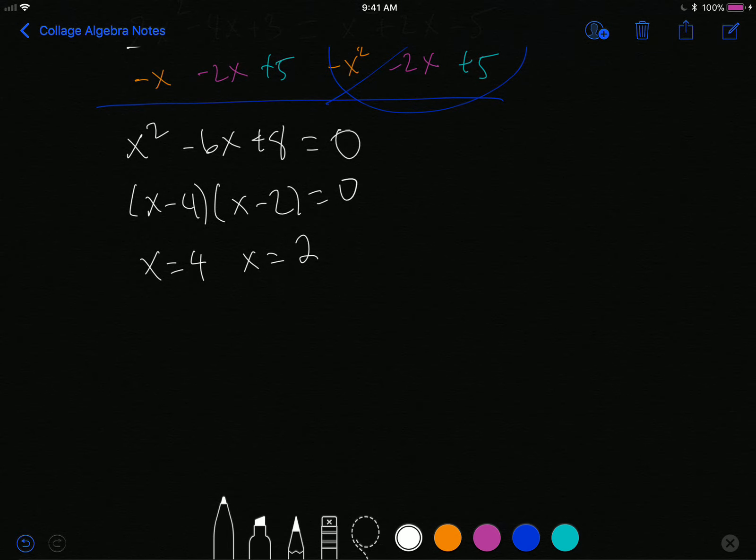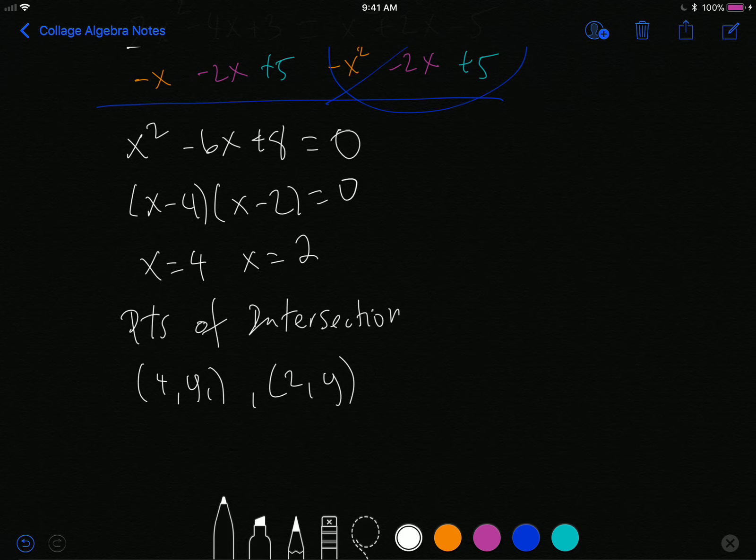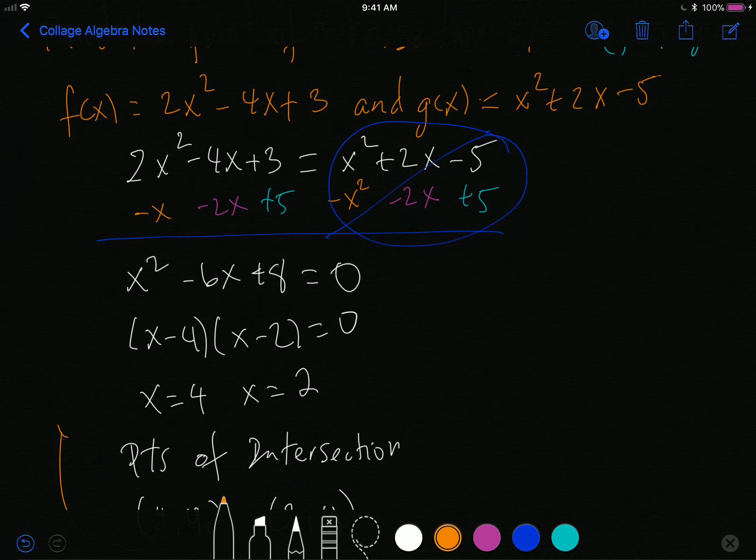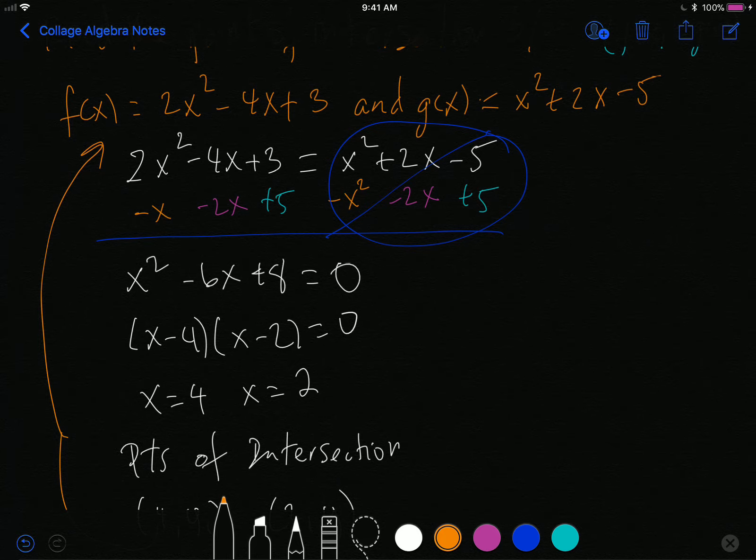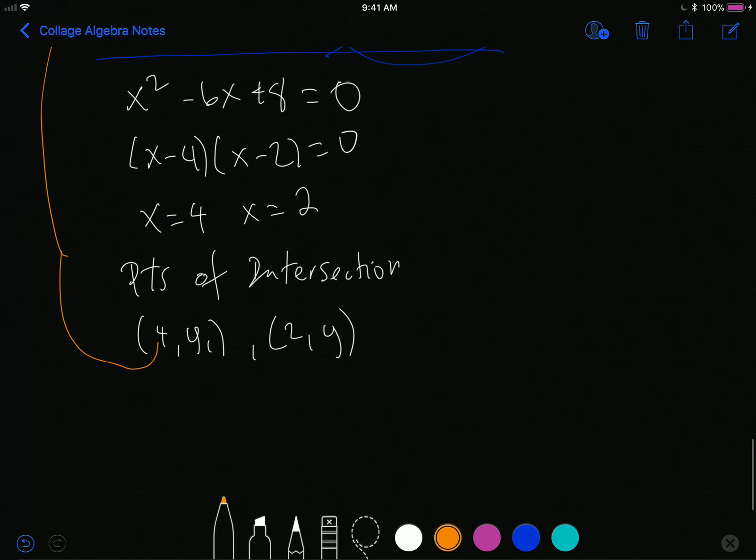And so what that tells us is that my two points of intersection, I have two of them, are 4 comma an unknown y and 2 comma an unknown y. How am I going to find those two unknown numbers? Very simple. I take 4 and I plug it into one of the original equations. It does not matter which one, I know that they will be equal. So it doesn't matter which one I plug it in, I will get the answer. And similarly, I will take 2 and plug it in as well.